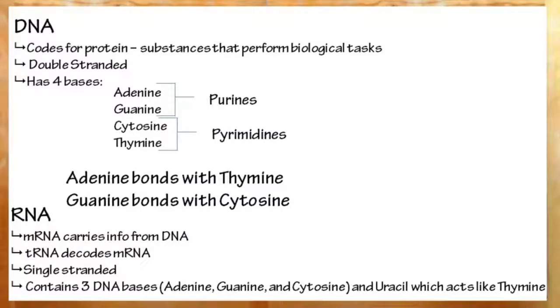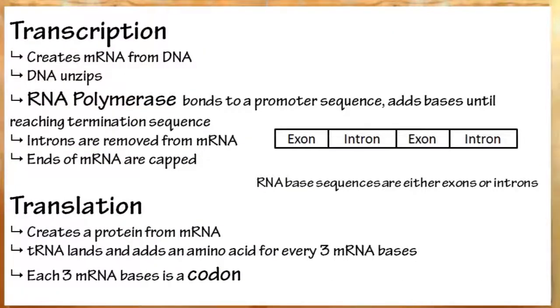DNA, however, cannot leave the nucleus. So it sends messenger RNA to code for proteins. This is formed when DNA unzips. Then, RNA polymerase at the promoter site adds RNA bases until it reaches the termination sequence. Then the mRNA is lifted off the DNA. Introns are removed from the mRNA and it is capped so that it is not digested.